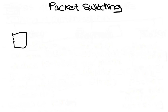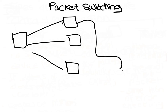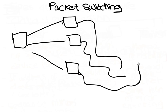Packet switching is the method of data transmission in which a message is broken up into a number of packets. Each packet can then be sent independently from start to endpoint. At the destination, the packets will need to be reassembled into the correct order using the information sent in the header.